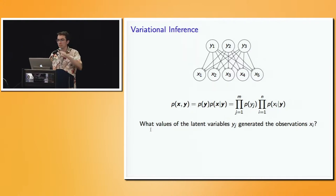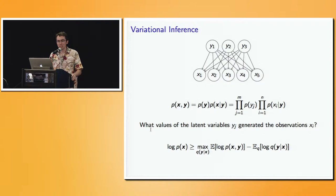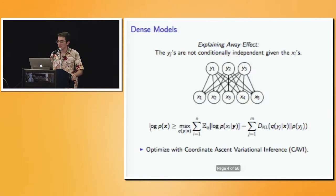There are many ways to think about inference. One — the most popular, you've already seen it — variational inference. You guys already know about the ELBO. This is the variational lower bound on log likelihood.